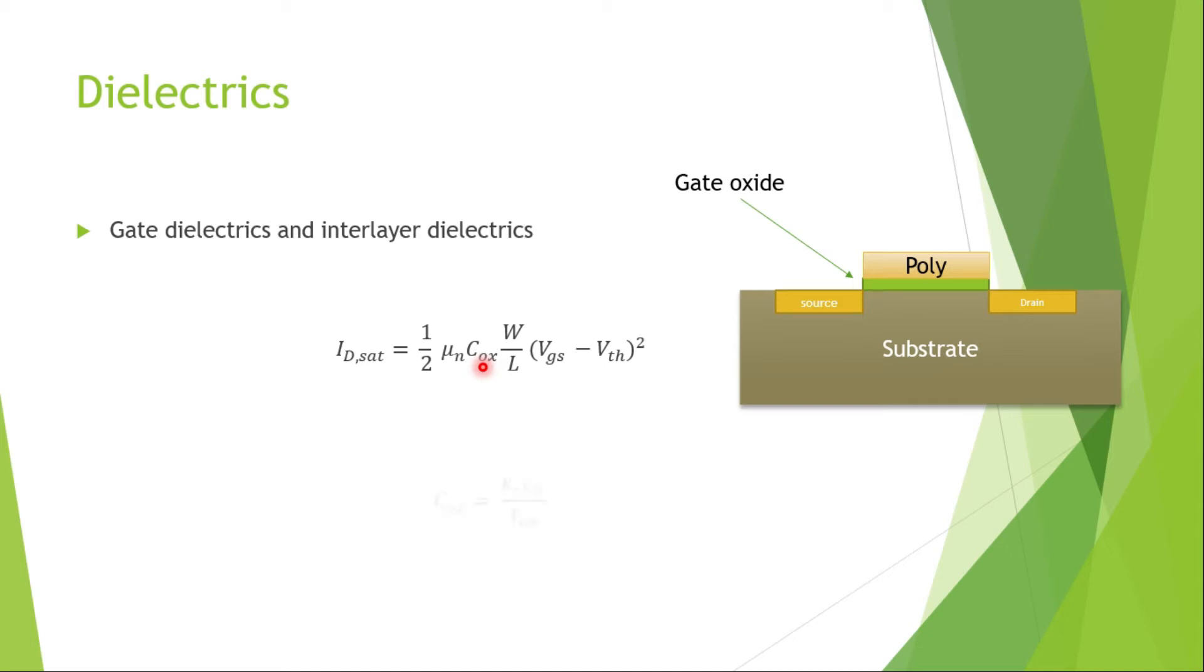The oxide capacitance itself is a function of K times epsilon naught divided by T ox. It's a function of the thickness of the oxide, where epsilon naught is permittivity of vacuum. In order to increase the oxide capacitance, the thickness of the oxide is scaled down in tandem with transistor scaling until the oxide thickness reaches only a few layers of molecules or a single atomic layer, which is deposited as atomic layer deposition.